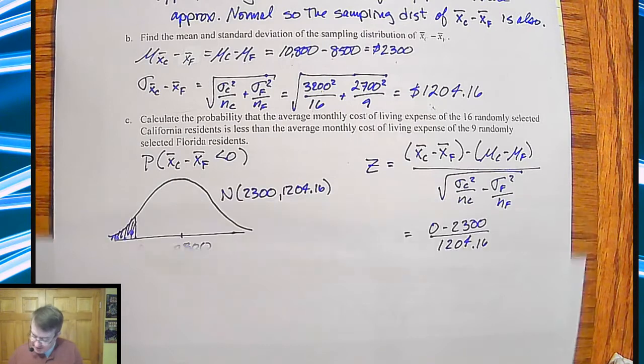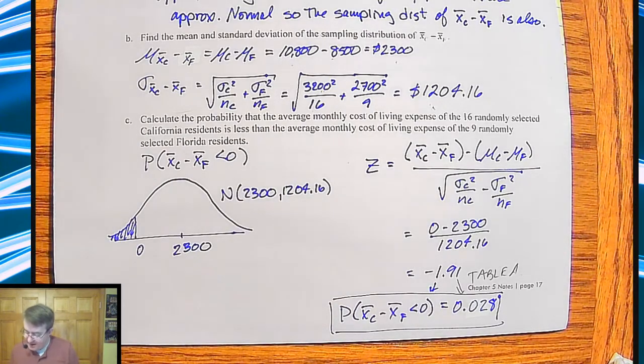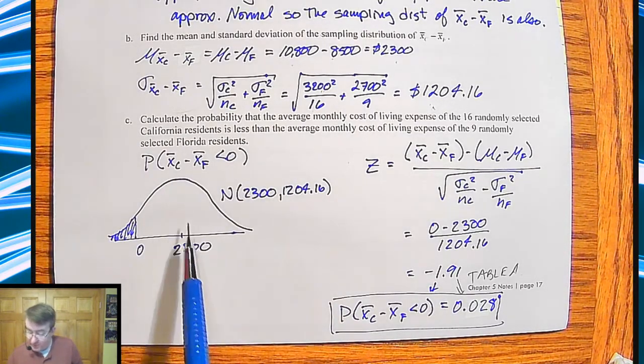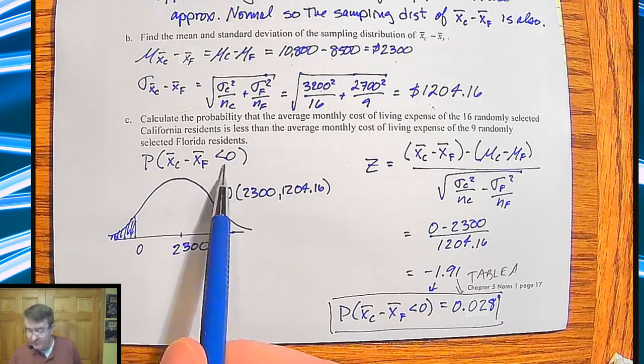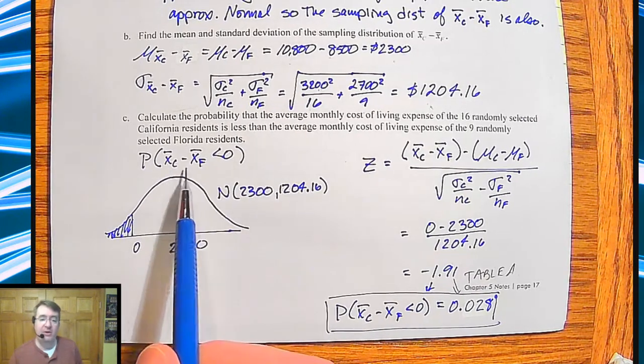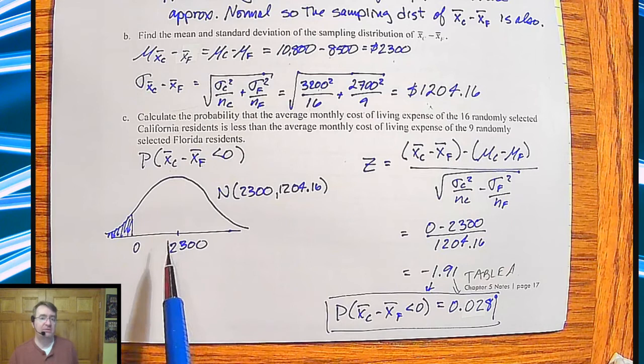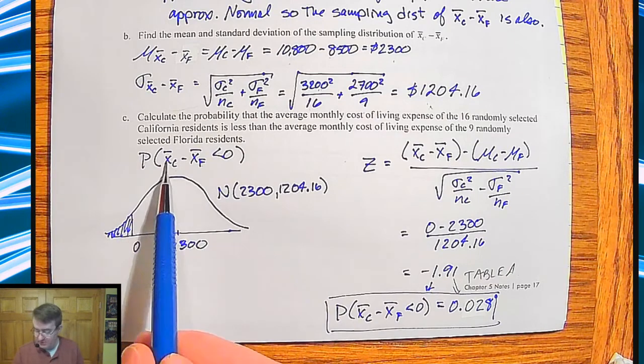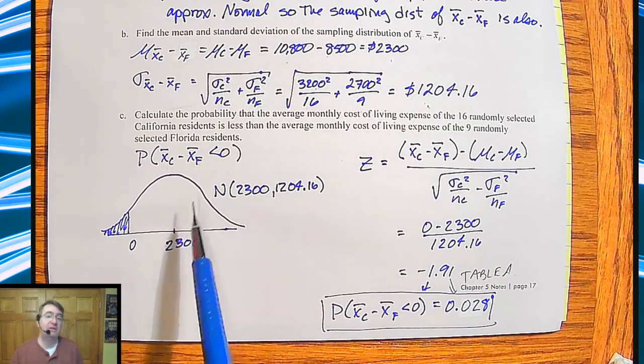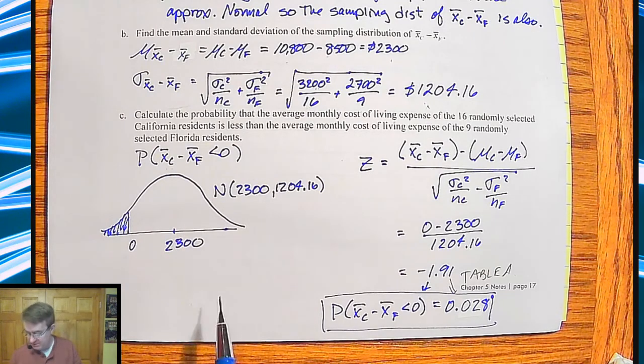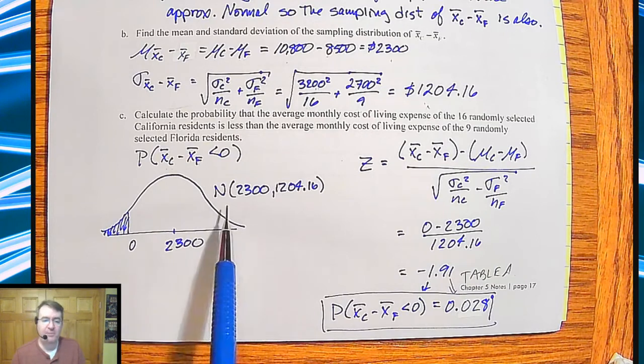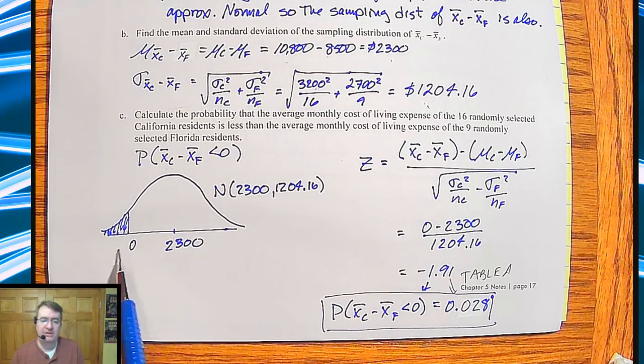Anyway, so then for the last part down here, calculate the probability that the average monthly cost is for somebody in California is actually less than somebody in Florida. Now, notice here the neat thing about being able to do differences is that we want the difference to be zero. It doesn't matter to some extent how high these two numbers are. We're just saying what's the chances that the difference is going to be less than zero. So it's kind of a neat way to take care of scaling sometimes. But we'll talk more about that as we go. Curve, we want less than zero.